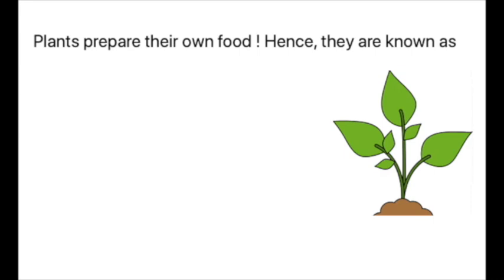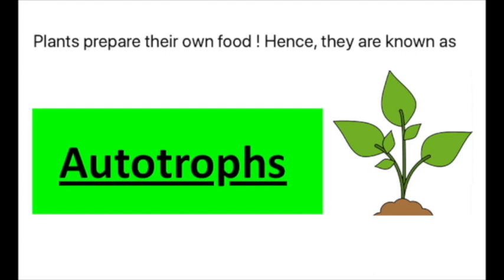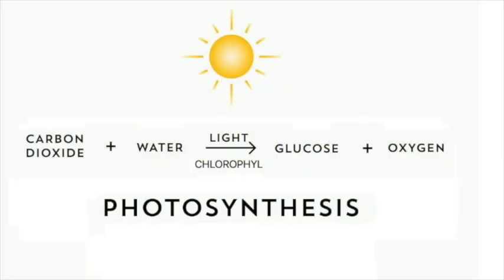Plants produce their own food for their growth, so plants are known as autotrophs. Plants produce their own food by themselves, so plants are autotrophs. In this reaction: carbon dioxide plus water, in the presence of sunlight and chlorophyll, gives us glucose and oxygen.